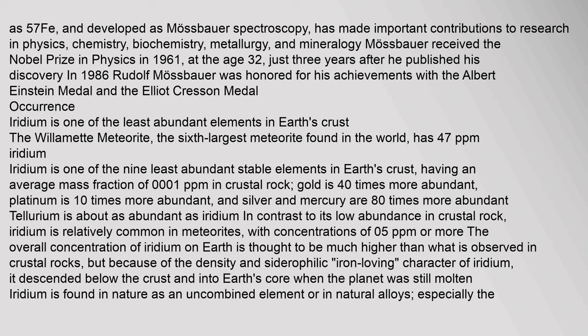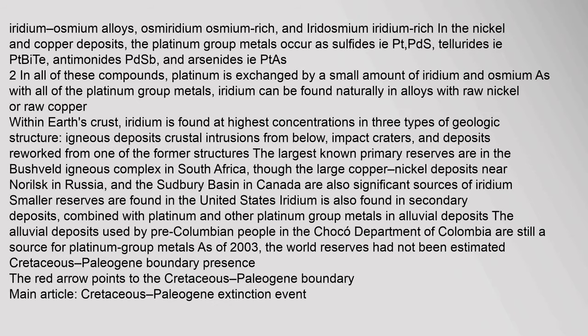Iridium is one of the least abundant elements in Earth's crust. The Willamette meteorite, the sixth largest meteorite found in the world, has 4.7 ppb iridium. Iridium-osmium alloys include osmeridium (osmium-rich) and iridosmium (iridium-rich). In the nickel and copper deposits, the platinum group metals occur as sulfides, tellurides, antimonides, and arsenides. In all of these compounds, platinum is exchanged by a small amount of iridium and osmium. Iridium can be found naturally in alloys with raw nickel or raw copper within Earth's crust, and is found at highest concentrations in three types of geologic structure: igneous deposits, impact craters, and deposits reworked from one of the former structures.